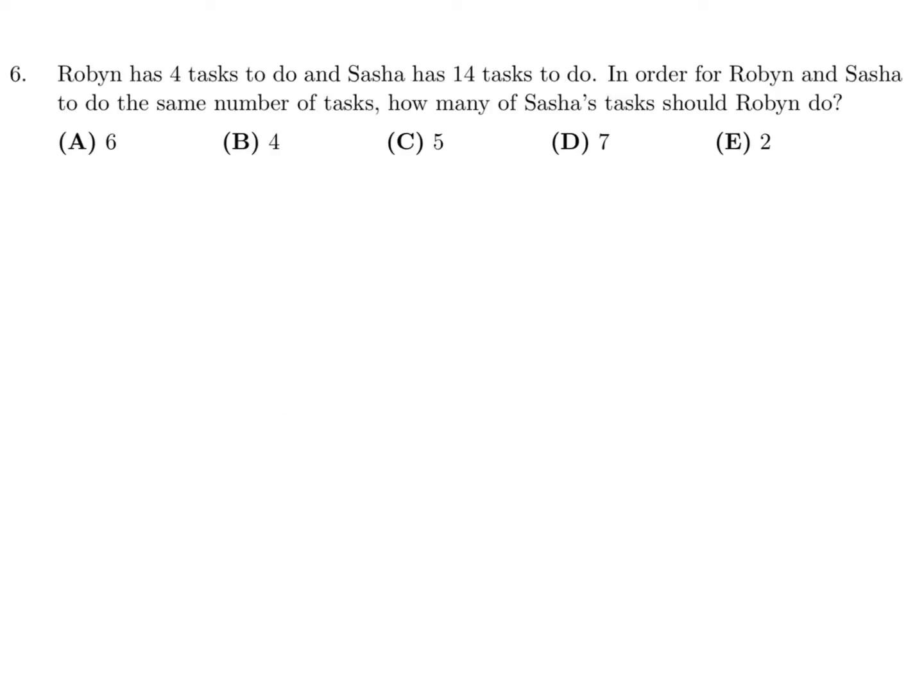Robin has 4 tasks to do, and Sasha has 14 tasks. In order for Robin and Sasha to do the same number of tasks, how many of Sasha's tasks should Robin do? Robin has 4, Sasha has 14. And we want the same, right? So the total is 4 plus 14, which is 18, and you divide by 2 to get how many tasks each would need to do in order for them to have equal, same number of tasks. So we want to go from 4 to 9. So obviously we have to add 5. So therefore that 5 would have to come from Sasha, according to the question. So number 6, the answer is C.